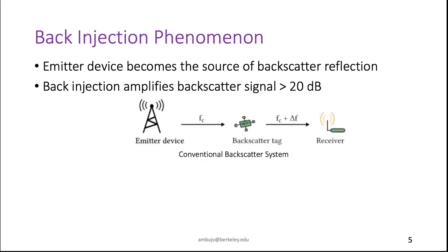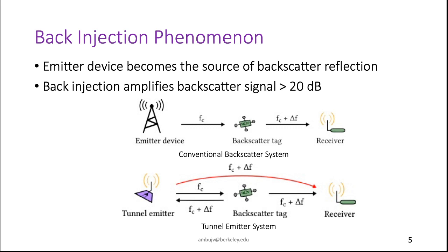Here we show a conventional backscatter system, and here we show a Tunnel Emitter system. In the Tunnel Emitter system, the Tunnel Emitter device generates a carrier signal which is reflected by the backscatter tag. This weak backscatter signal from the tag arrives back at the Tunnel Emitter, which, due to the back injection phenomenon, amplifies the signal and transmits it to the receiver. At the receiver, we receive two signals — one coming from the tag and one from the emitter — and the signal from the emitter is many orders of magnitude stronger, making Tunnel Emitter different from all existing backscatter systems.